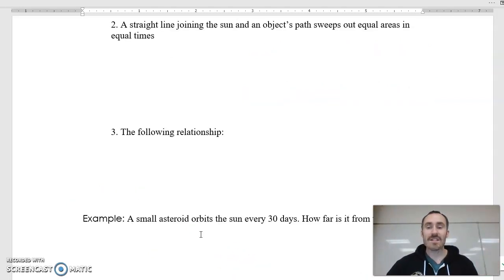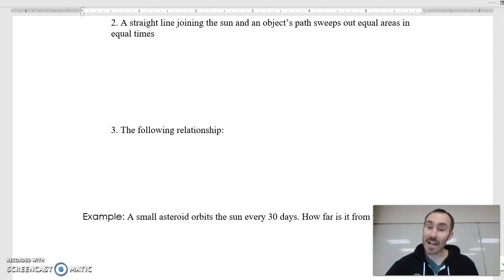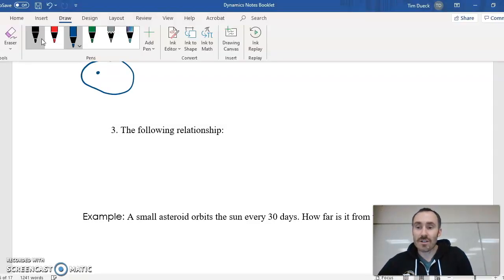The second law that you came up with is that a straight line joining the sun and an object's path sweeps out equal areas in equal times. That's super confusing and is easiest with an animation. Unfortunately, I cannot do an animation or I don't have that skill. So I'm going to try and draw this as a still picture. So here is our elliptical orbit with the sun at one focus. Again, very much exaggerated.